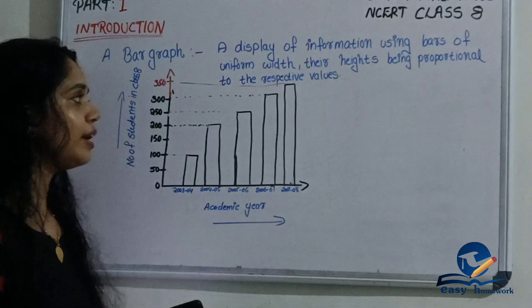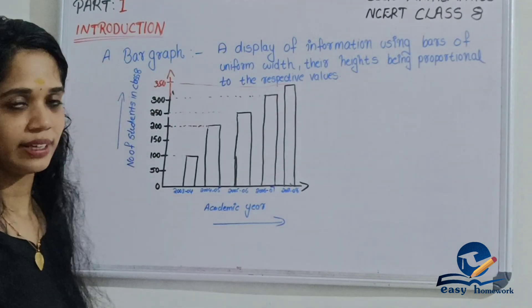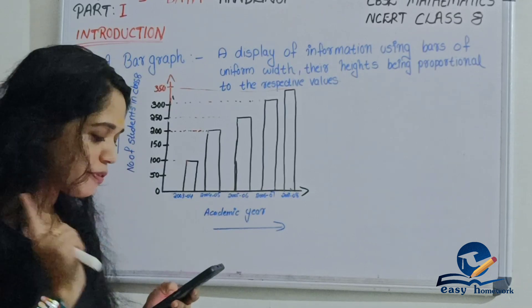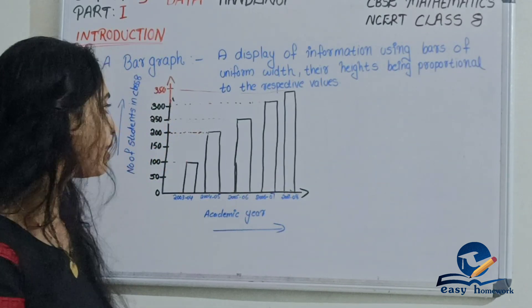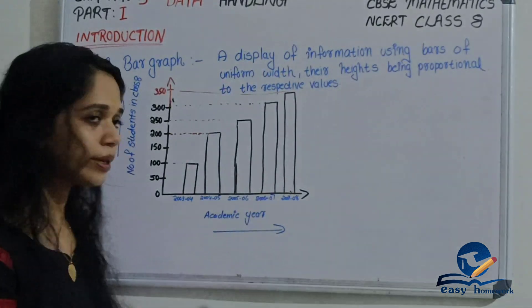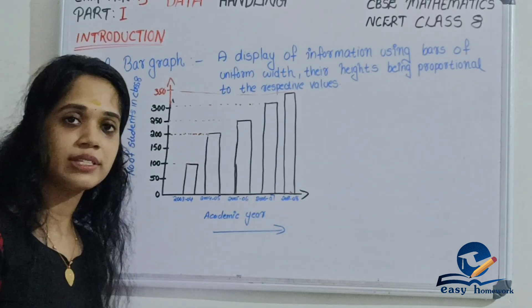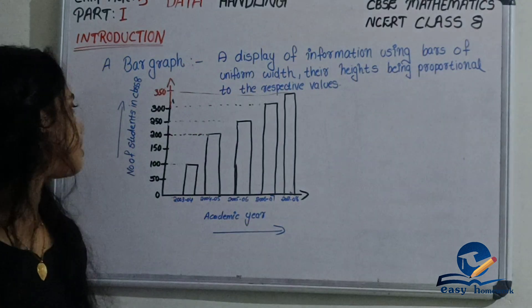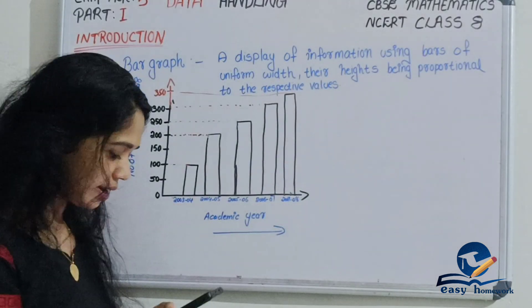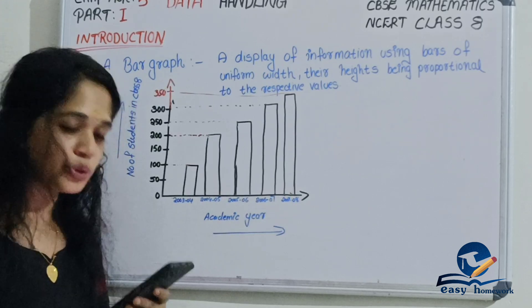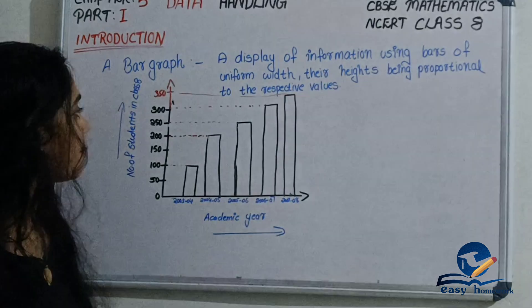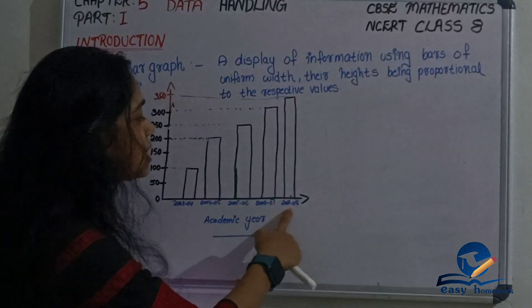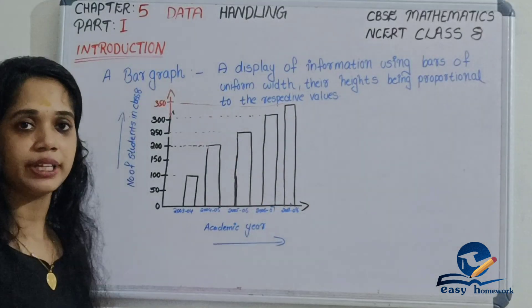Here we are showing data and asking questions about it. The first question is: what is the information given by the graph? It shows the number of students in Class 8 for each academic year. In which year was the number of students maximum? The maximum number of students is in 2007-2008, which is 350 students.